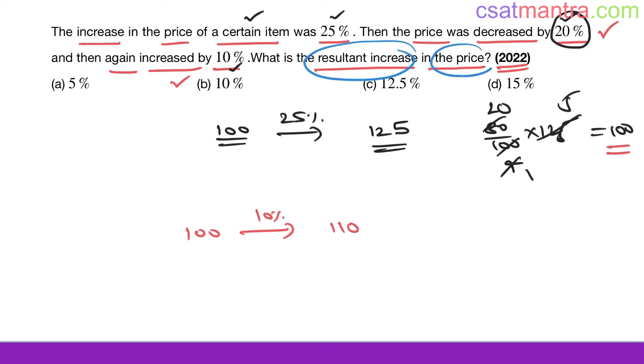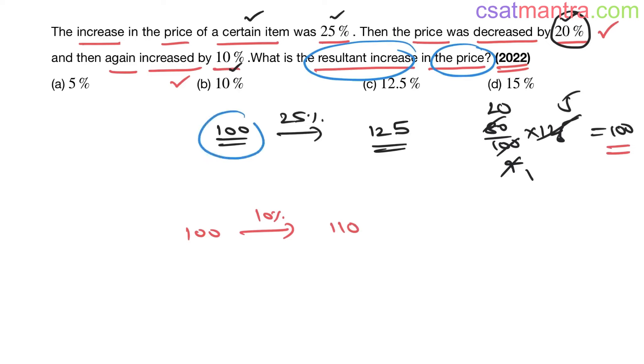Now what is the resultant increase in the price? Initially it was 100 rupees, now 110. How much increase? 10 rupees. 10 rupees means 10%. Answer B. 10 rupees is 10% of 100, right? So answer B. This is the easiest way to solve this problem.